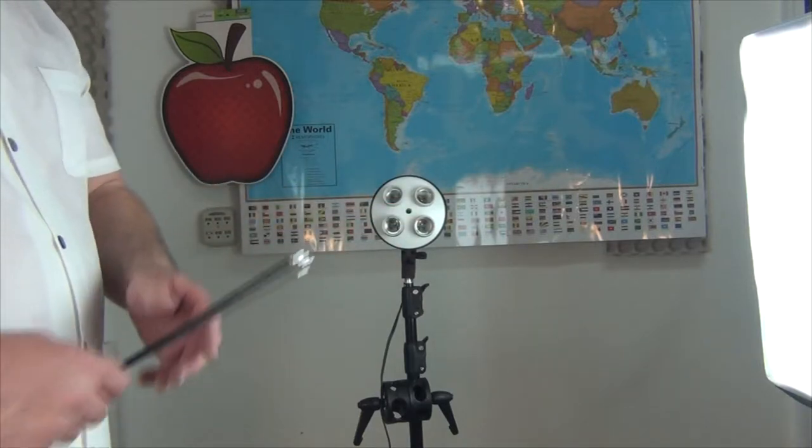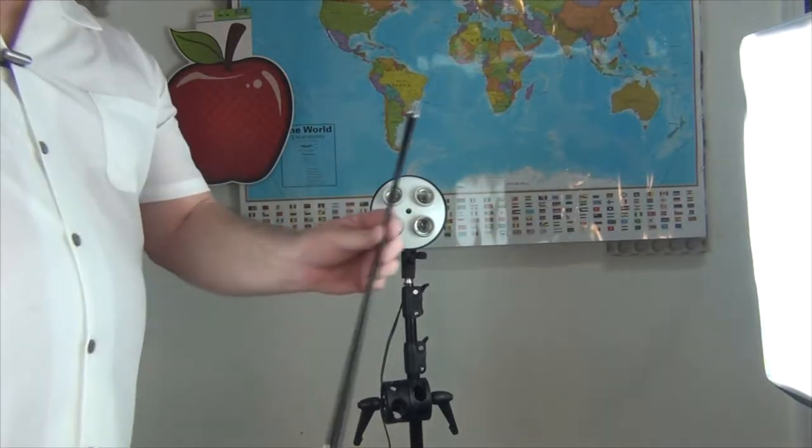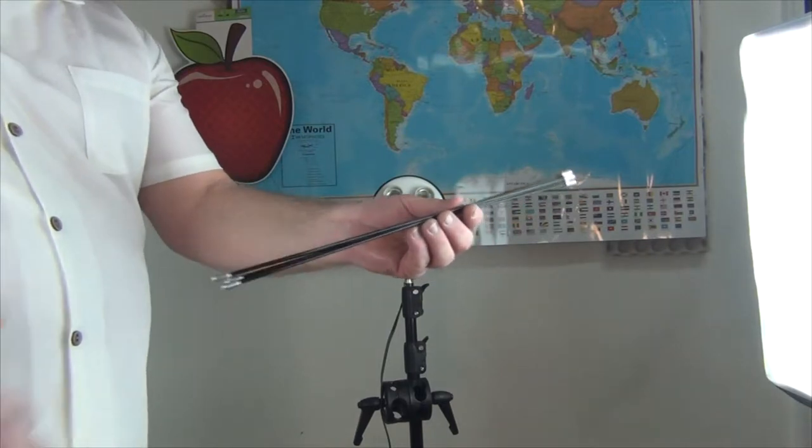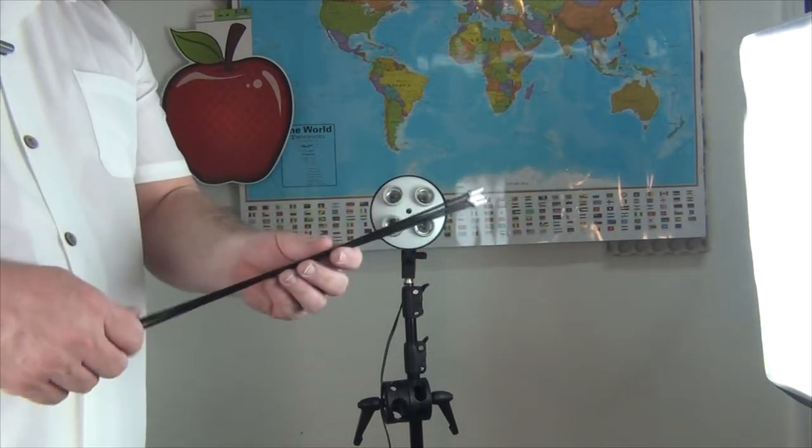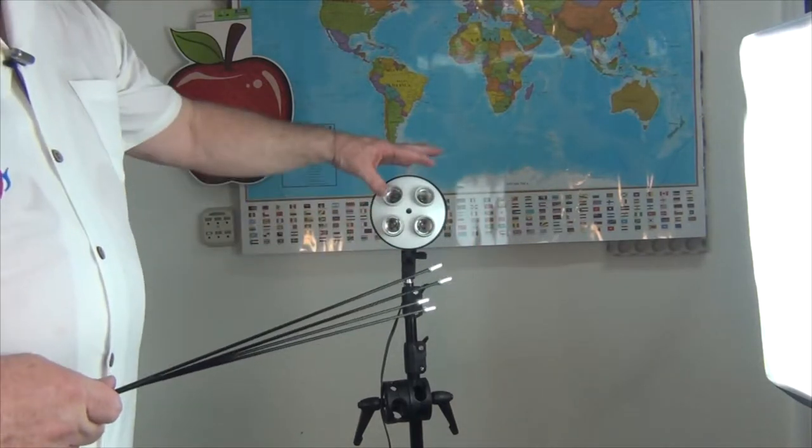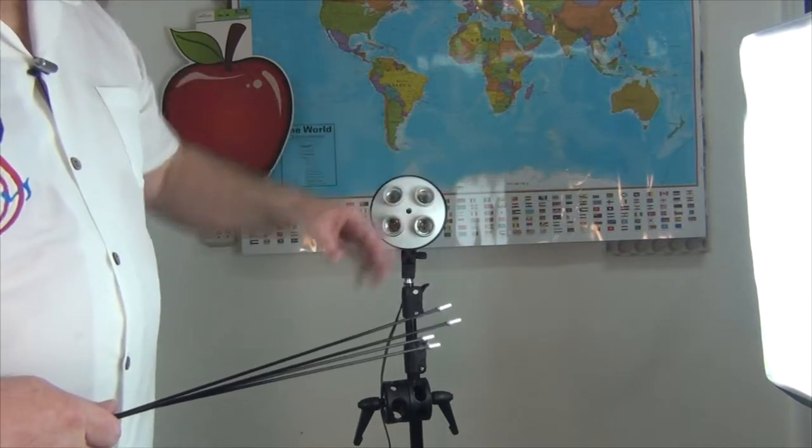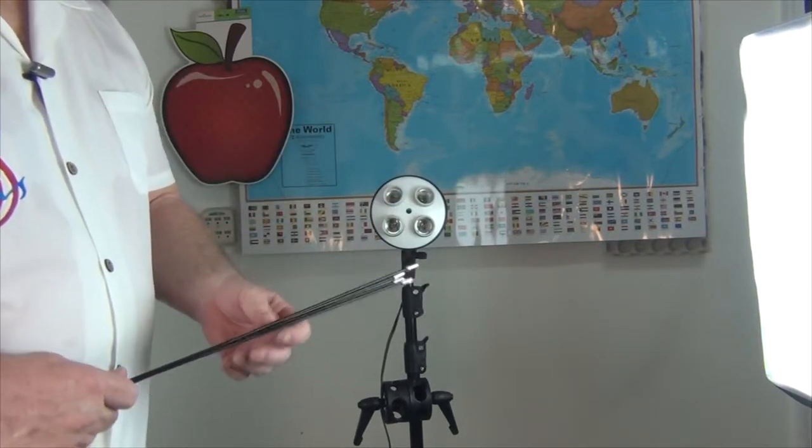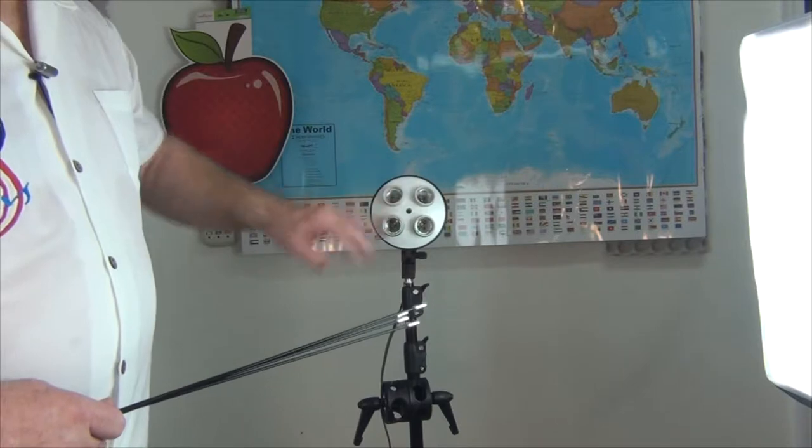You'll also notice that there are two different size sticks. There's the shorter sticks and the longer sticks. So the shorter sticks go with the four lights. The longer sticks go with the light heads that have five lights.